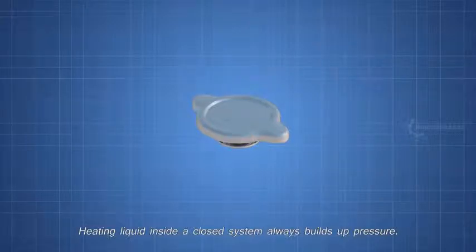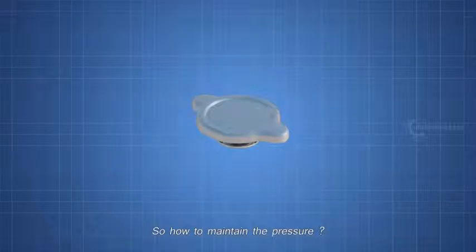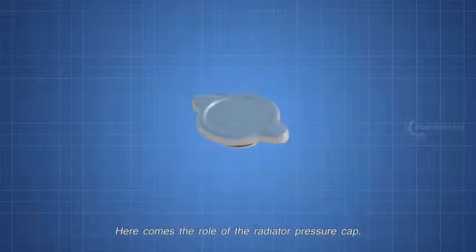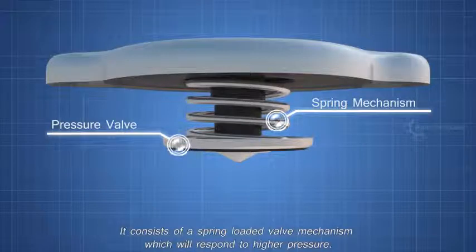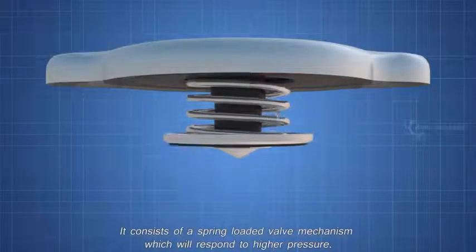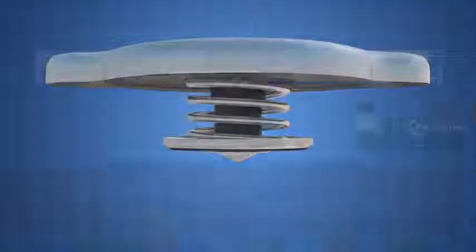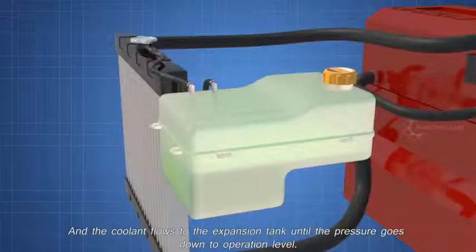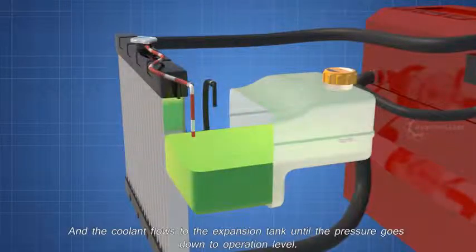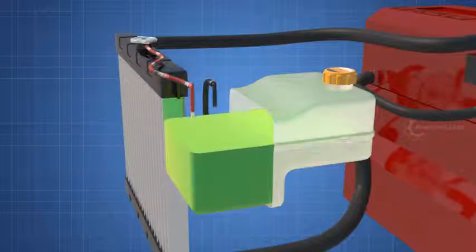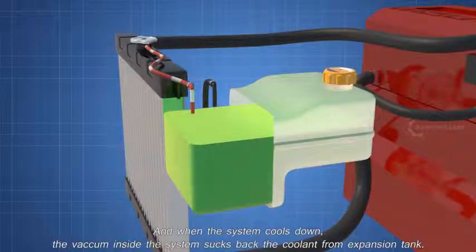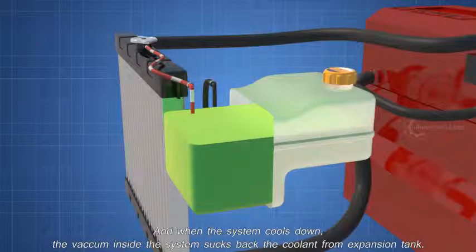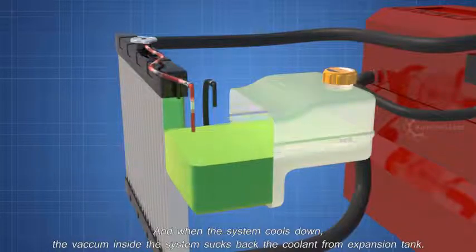Heating liquid inside a closed system always builds up pressure. So, how to maintain the pressure? Here comes the role of the radiator pressure cap. It consists of a spring loaded valve mechanism which will respond to higher pressure. Reaching a pressure above 15 PSI will push the pressure cap valve, and the coolant flows to the expansion tank until the pressure goes down to operation level. And when the system cools down, the vacuum inside the system sucks back the coolant from expansion tank.